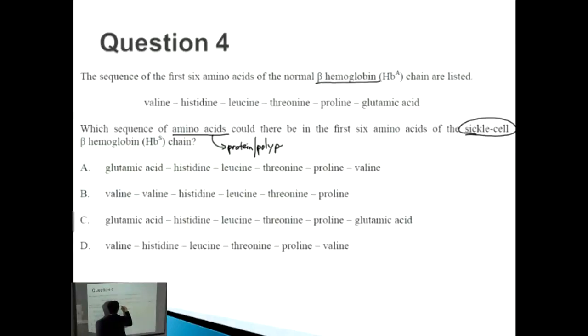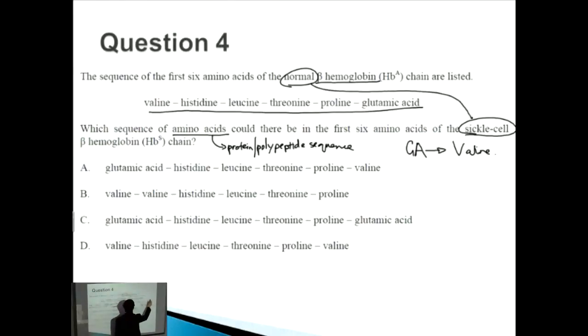What did we say before? Because it's in alphabetical order, glutamic acid goes to become valine. That's very simple. Now let's backtrack it to above where it gives us the first six amino acids of the normal beta hemoglobin chain. Once it becomes the sickle cell mutation, something will change: glutamic acid will become valine. So this one at the very end will become valine.